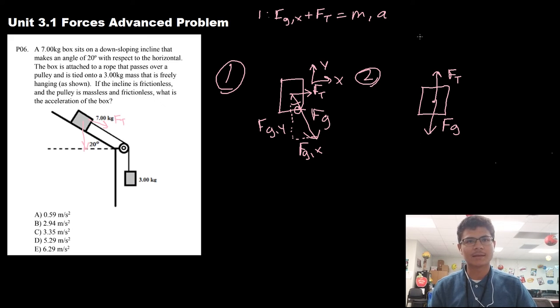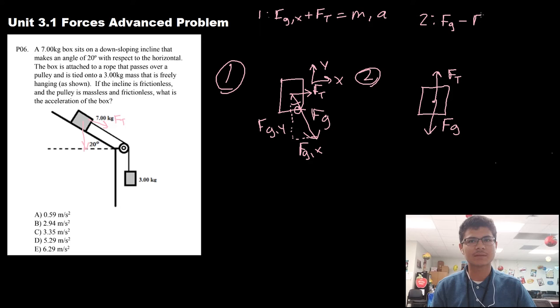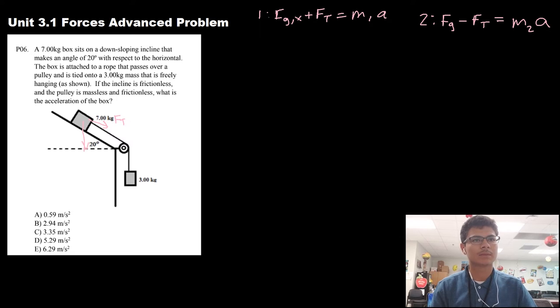Let's add our second equation here. We have the force of gravity, then we're going to do minus the force of tension because it's opposing the direction, equals mass 2 acceleration. Now this is going to be mass 2, that's what I'm going to set it as. Let me get all this other stuff out of the way.